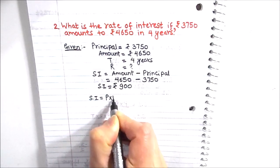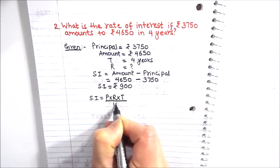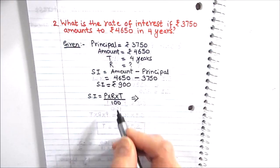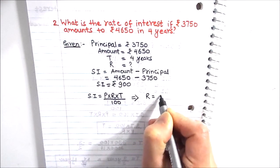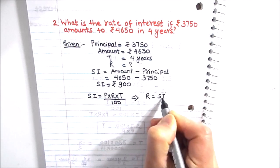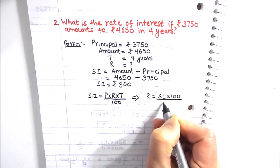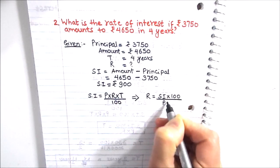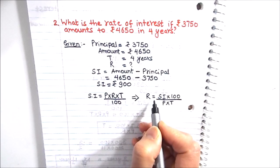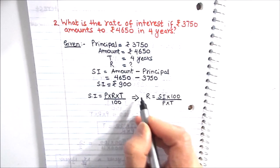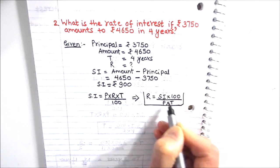Now we write the formula for simple interest as Principal × Rate × Time ÷ 100. From this, we derive rate of interest as: R = Simple Interest × 100 ÷ (Principal × Time). We will now put the values into this formula to find the rate of interest.